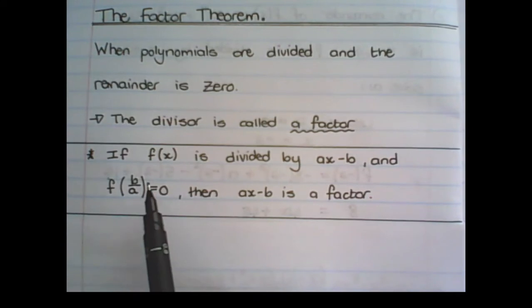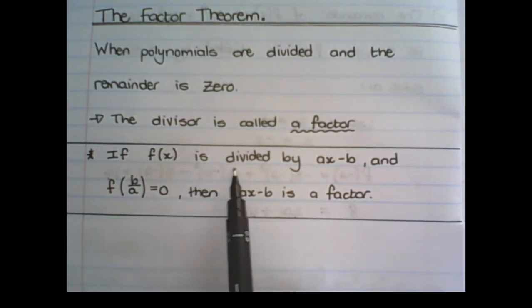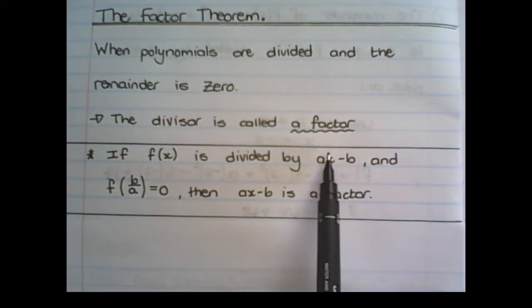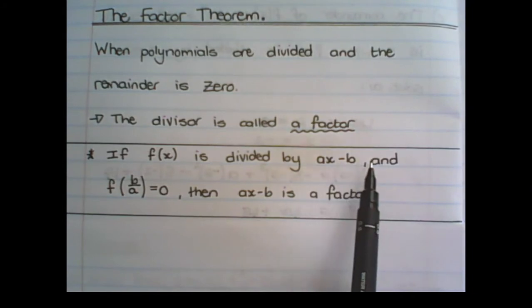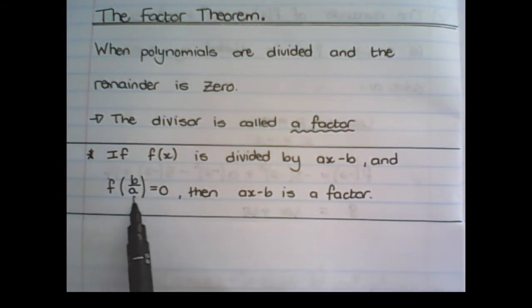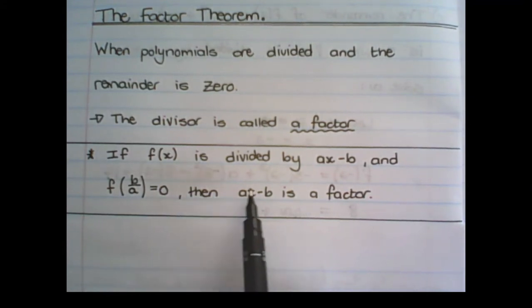What it means is, if I have f(x), and it is divided by an expression of ax-b, and the remainder is zero, meaning there is no remainder, then ax-b is a factor.